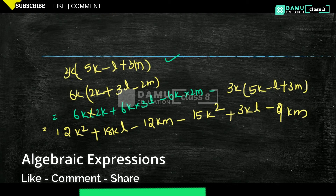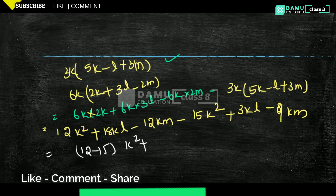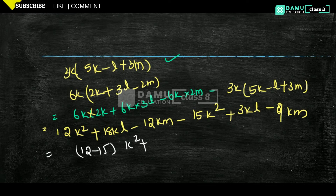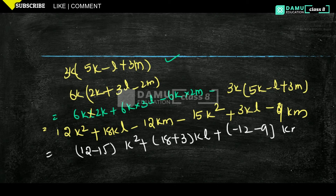Is there anything in common? So 12k squared minus 15k squared — take k squared common outside. For kl: plus 18 plus 3 into kl. Then for km: minus 12 minus 9 into km. So 12 minus 15 gives minus 3k squared.